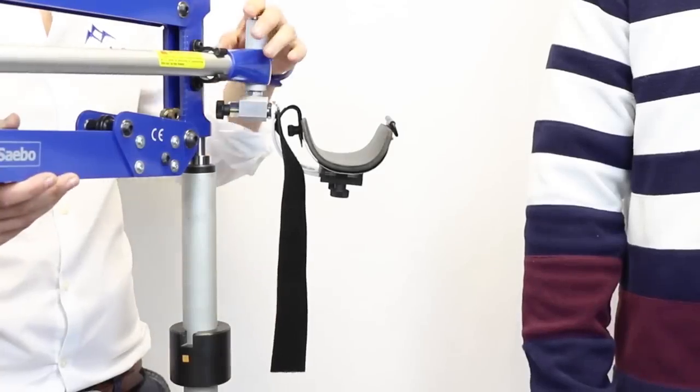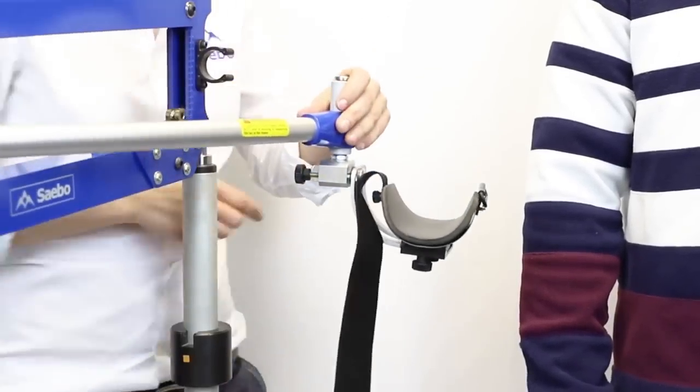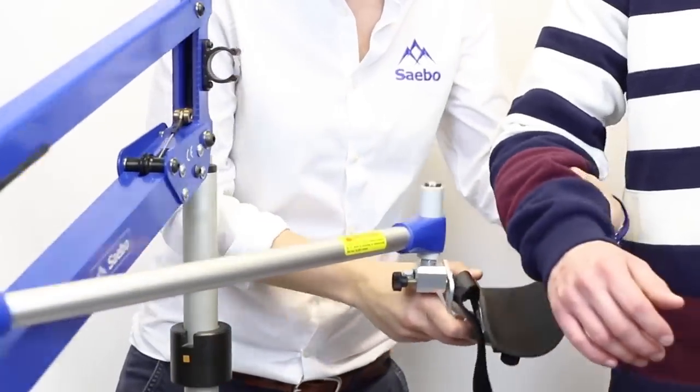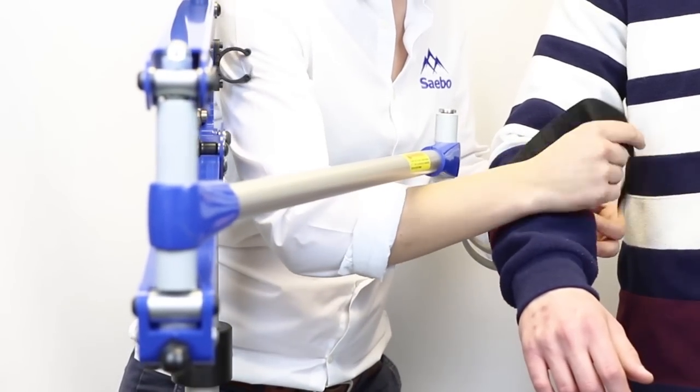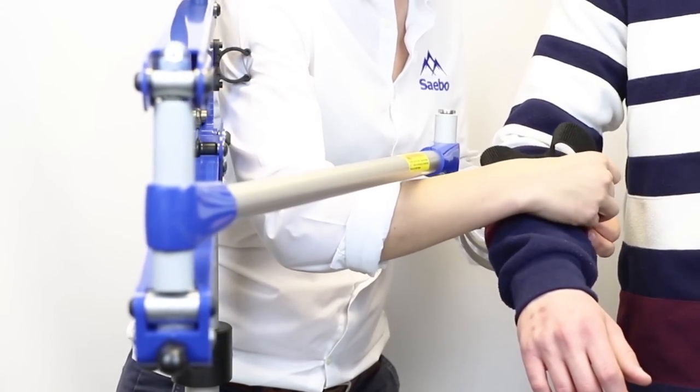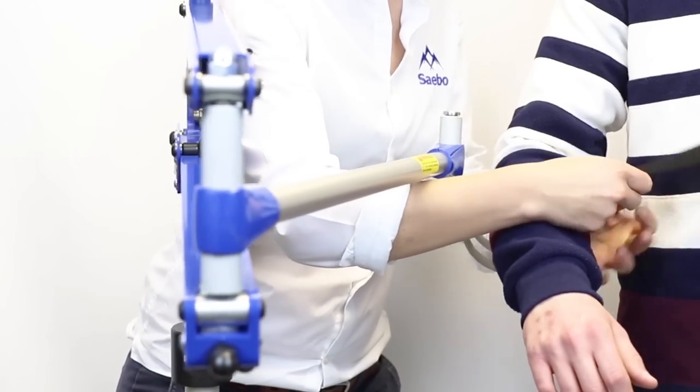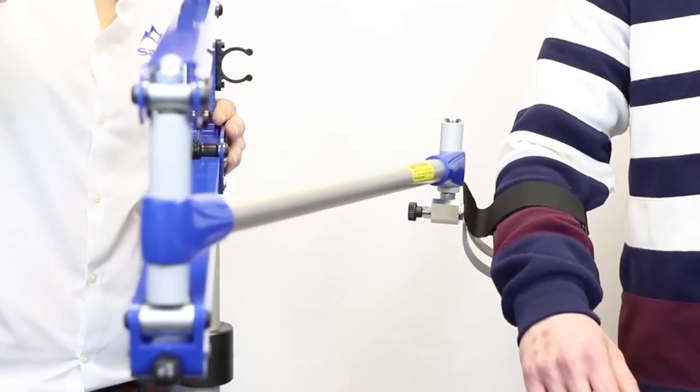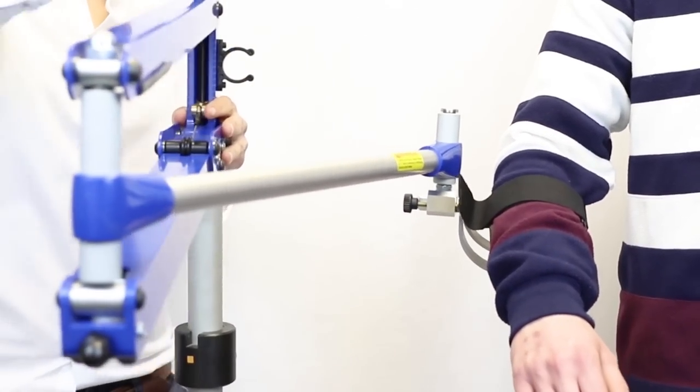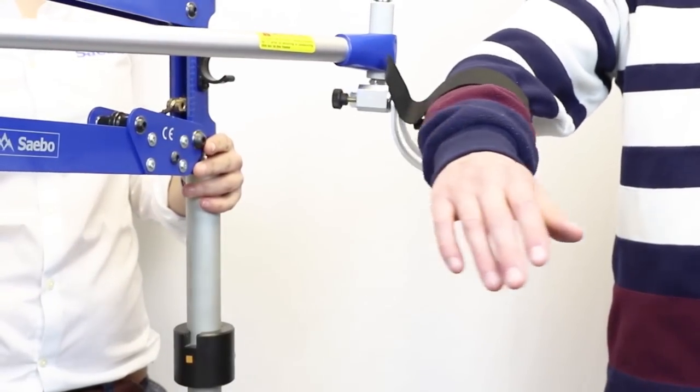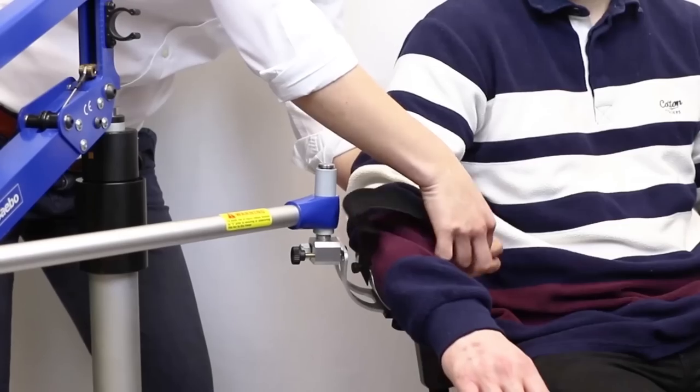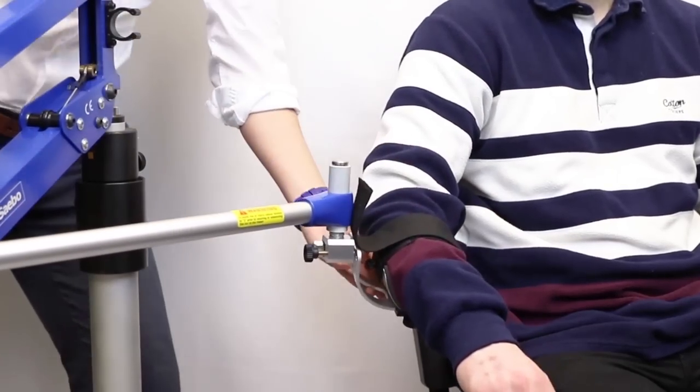You can use the Sabo Mobile Arm support in varying positions for your patient. You can use it in a standing position by adjusting the height. You can use it in a seated position.